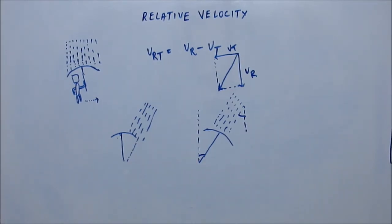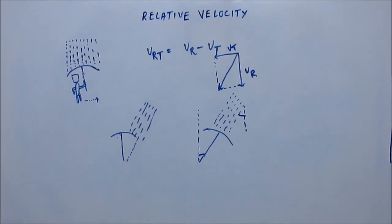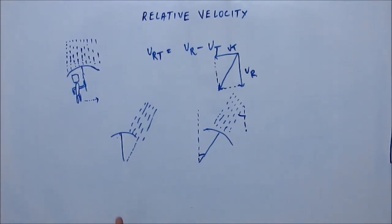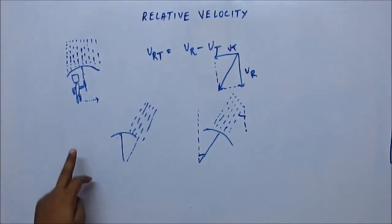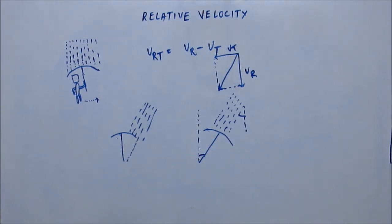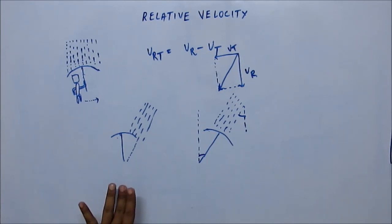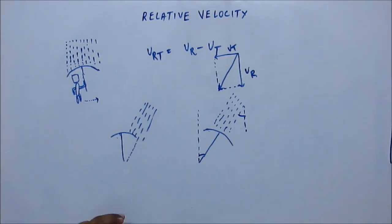This is what vector algebra tells us — the rain would appear to be coming at an angle with the vertical, appearing oblique. When I studied this for the first time, I got stuck on it. It took me some time to realize why this would be so. If rain is coming vertically, it comes vertically — it won't come obliquely just because Tom is running. You should spend some time thinking about this.